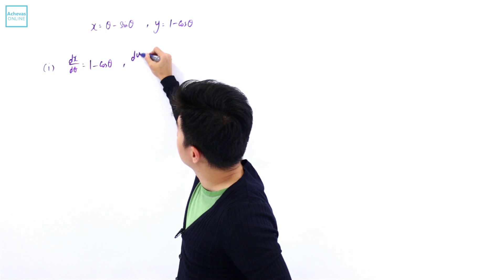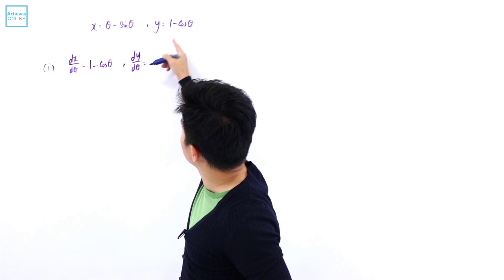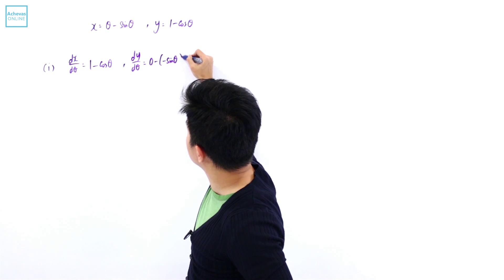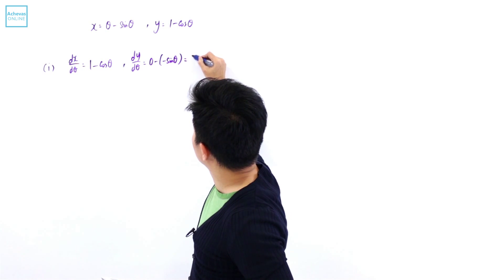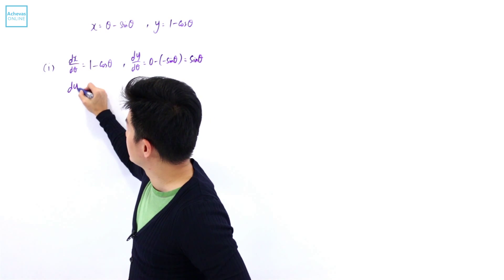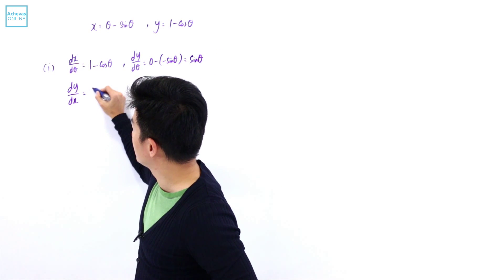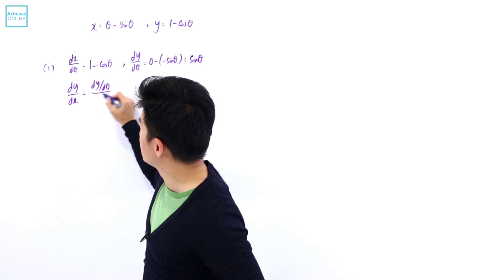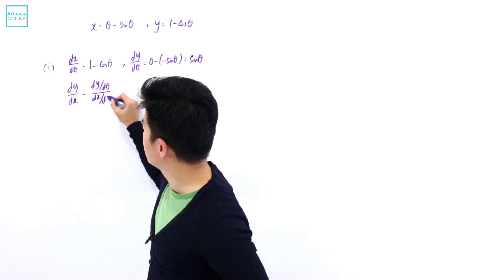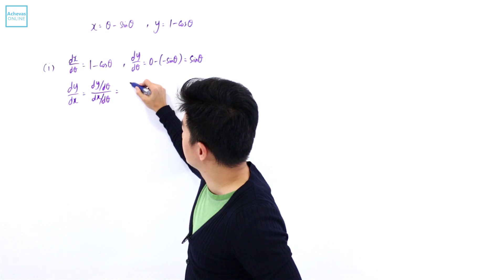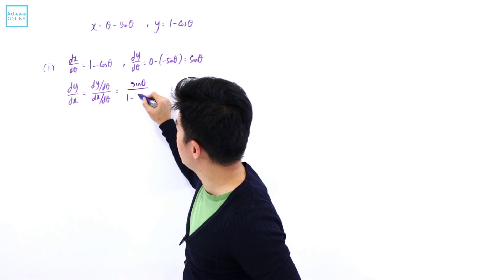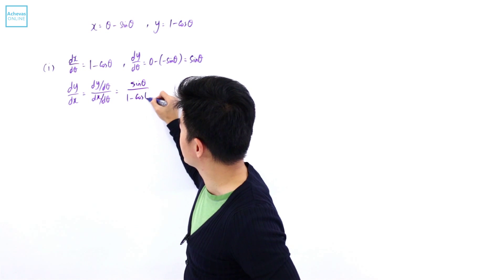Then let's find dy/dθ. dy/dθ is going to be 0 minus minus sine theta, which is going to be equal to just sine theta. So dy/dx, which is dy/dθ divided by dx/dθ, is sine theta divided by 1 minus cosine theta.